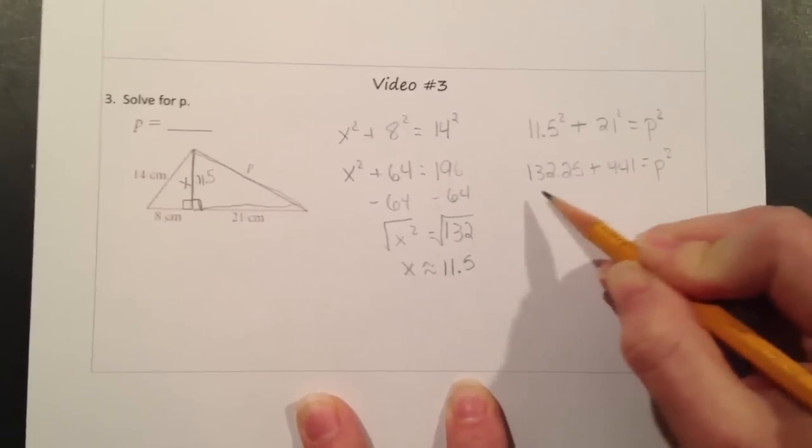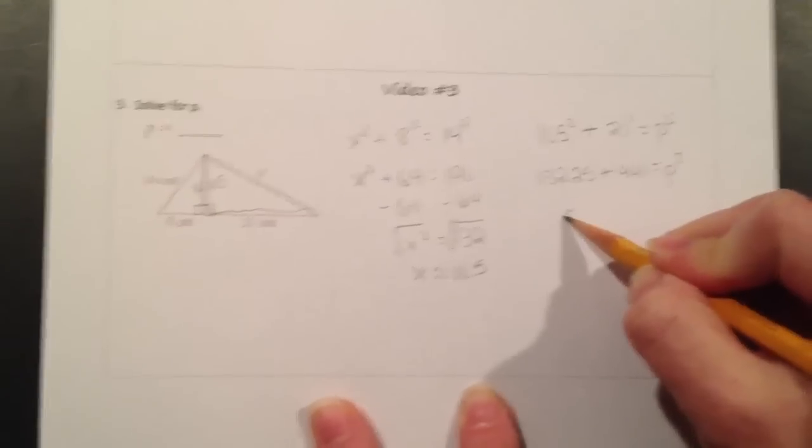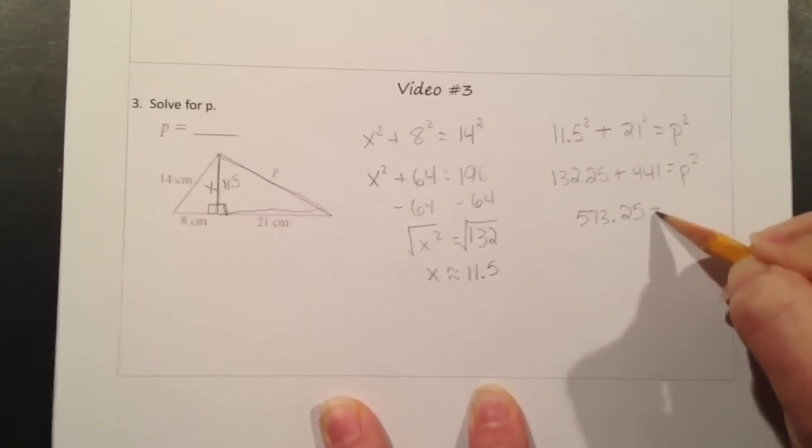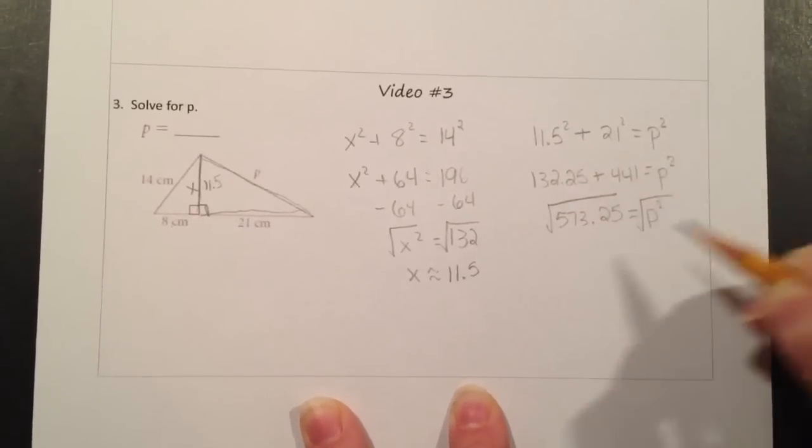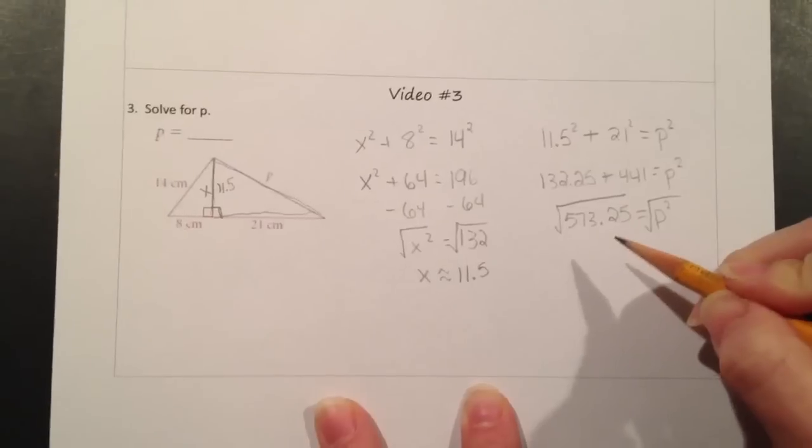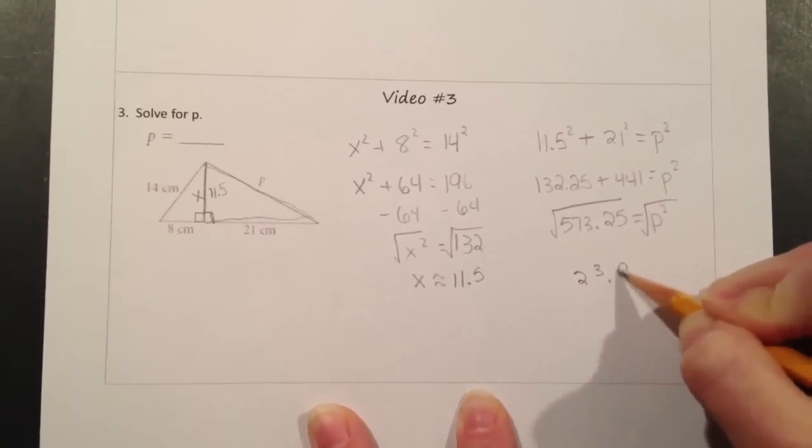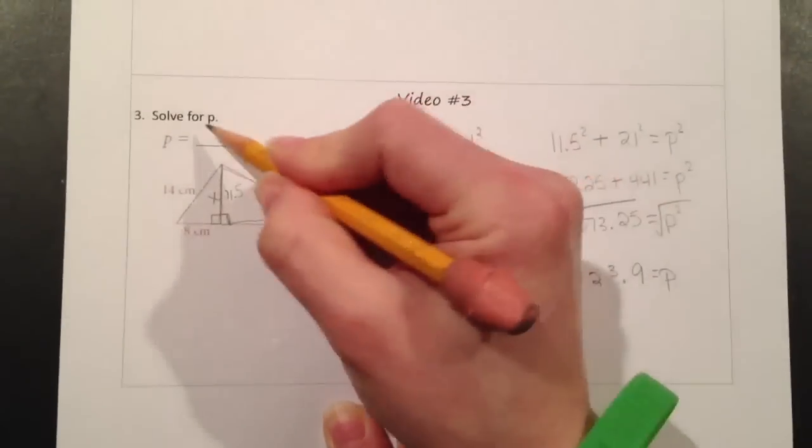When we add 132.25 plus 441, we get 573.25 equals p squared. To solve for this, we're going to take the square root of both sides. So the square root of 573.25 is approximately 23.9. Therefore, p is approximately 23.9 centimeters.